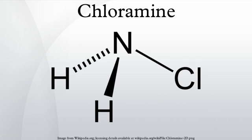Gaseous chloramine can be obtained from the reaction of gaseous ammonia with chlorine gas: 2NH3(g) + Cl2(g) → NH2Cl(g) + NH4Cl(s). Pure chloramine can be prepared by passing fluoramine through calcium chloride: 2NH2F + CaCl2 → 2NH2Cl + CaF2.